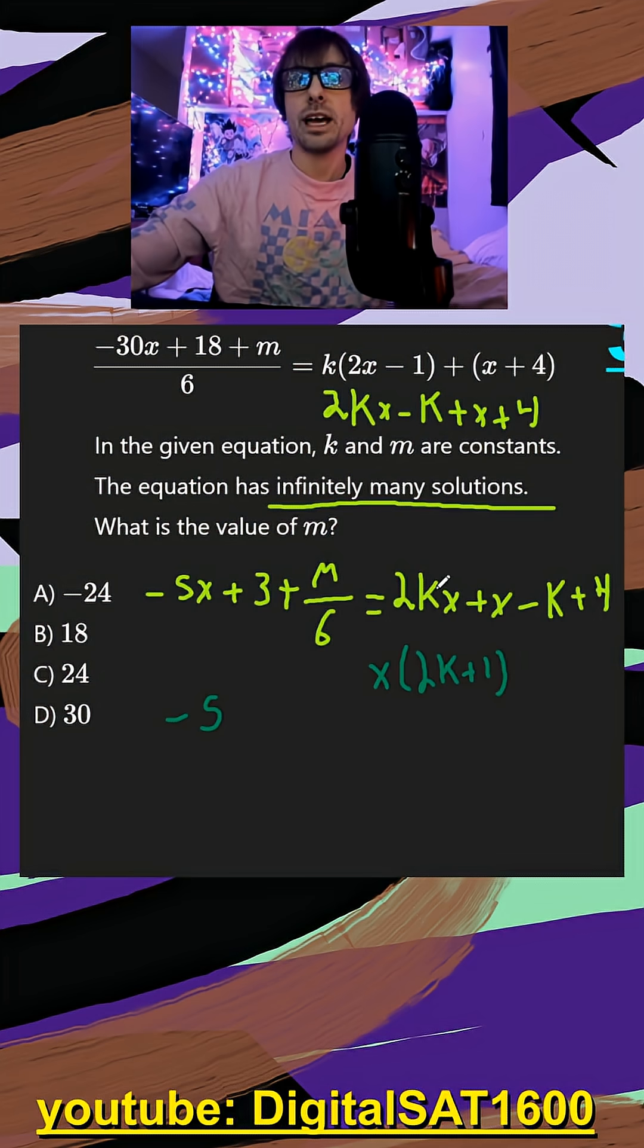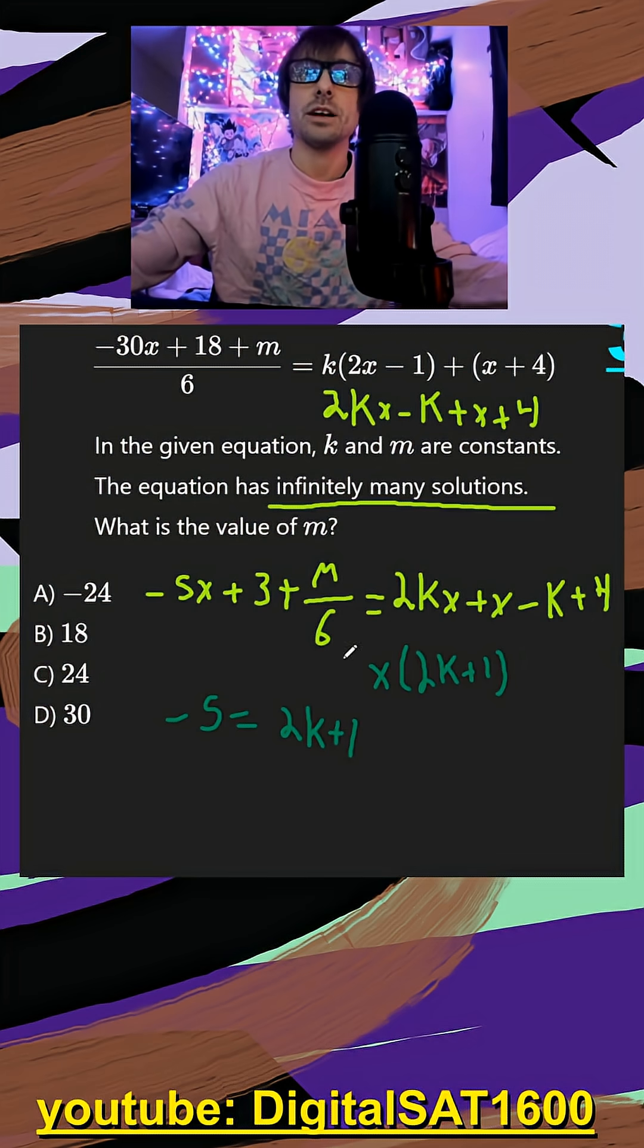Because if I would redistribute, I would get 2kx plus x, right? So my first equation is negative 5 is equal to 2k plus 1, because those are my two coefficients in front of our x value.